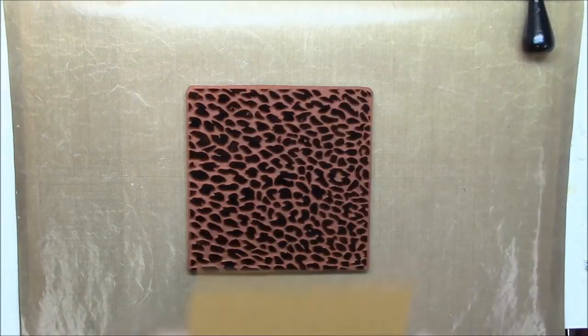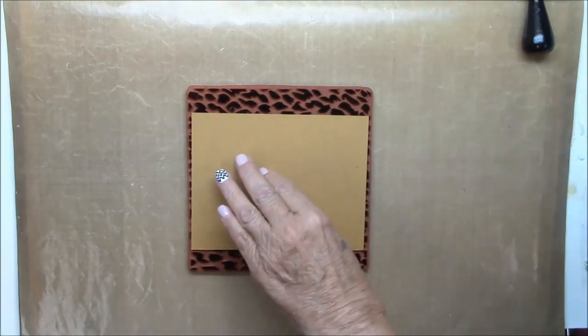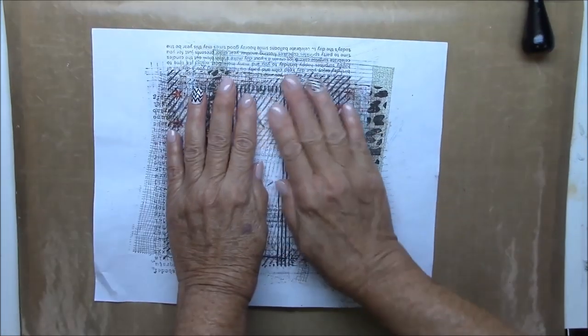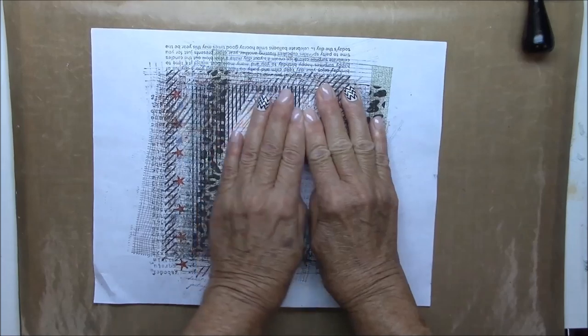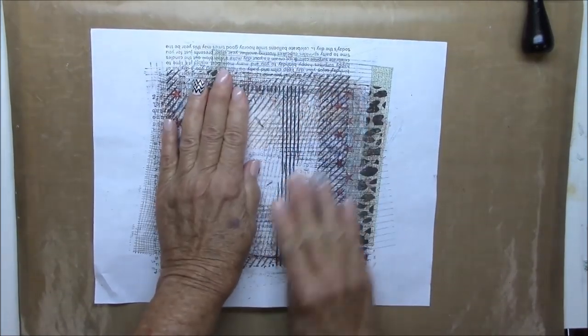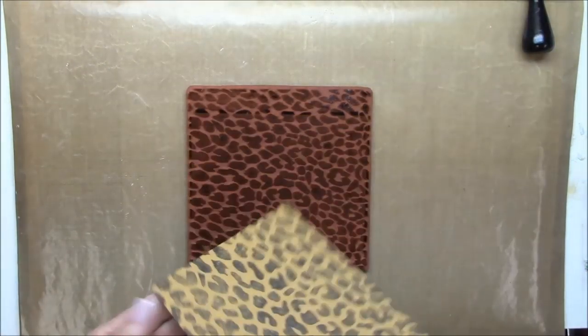Then I'm going to stamp it on my cardstock and for these rubber backgrounds I find that I get a better impression if I put my cardstock on top of my stamp and then use a piece of copy paper to help me rub the ink onto the cardstock. There you go.